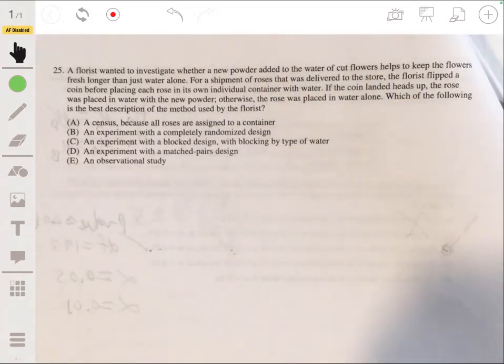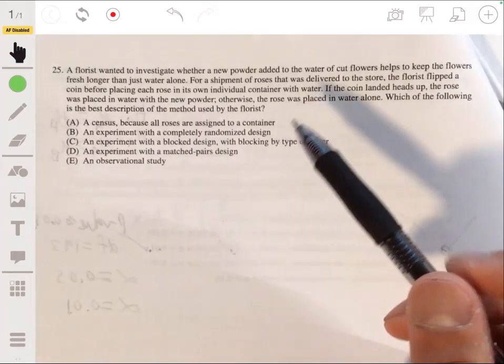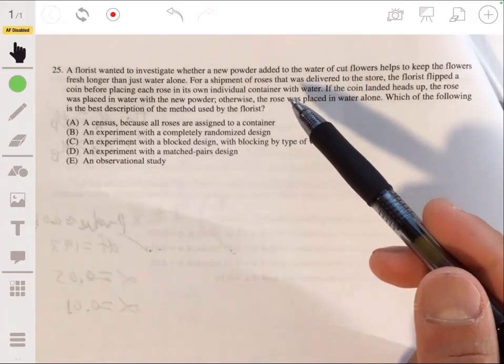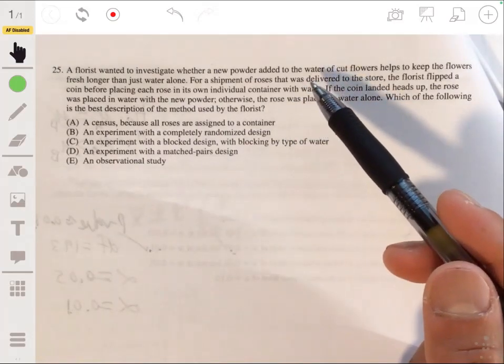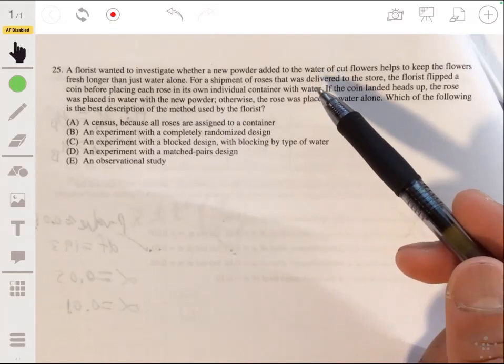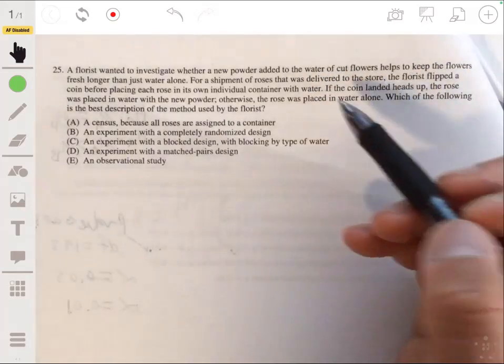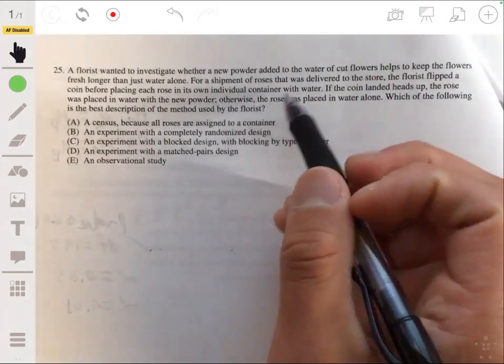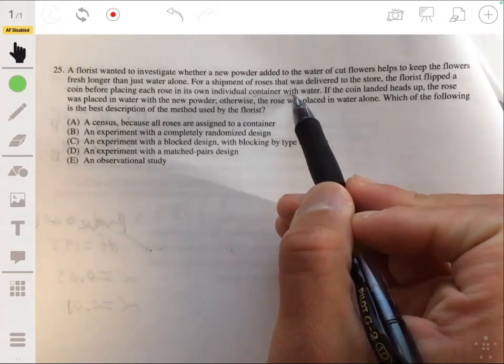Okay, so the first thing you want to recognize is that you got an experiment going on. You got an experiment because treatment was imposed. He did something. He did something with flowers, you know, he basically had them broken down into two groups.